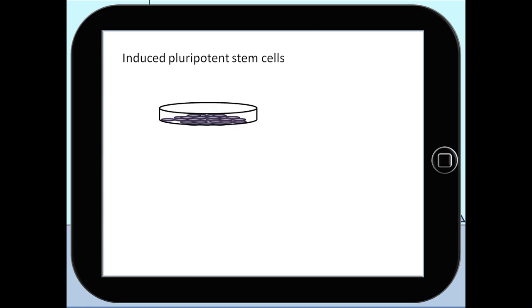Induced pluripotent stem cells eliminates the ethical issues connected to using embryonic stem cells. Using induced pluripotent stem cells means that you are using the patient's own cells and the problems of immune rejection are therefore also avoided.